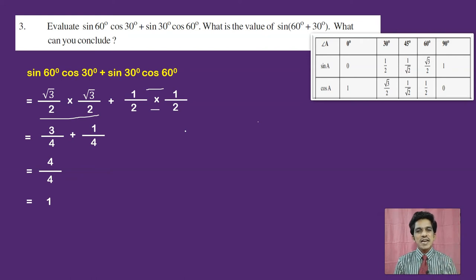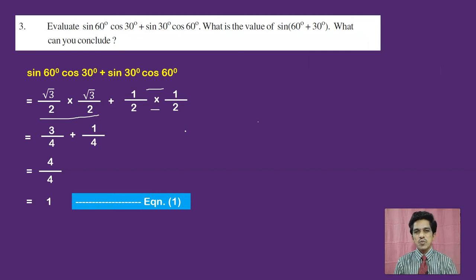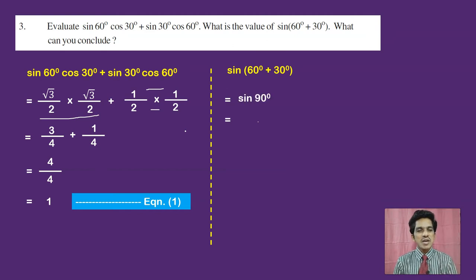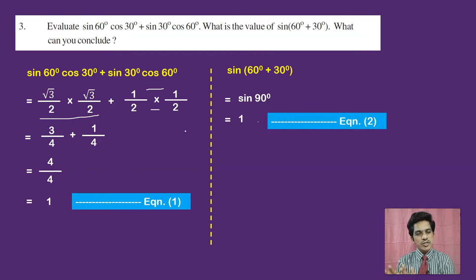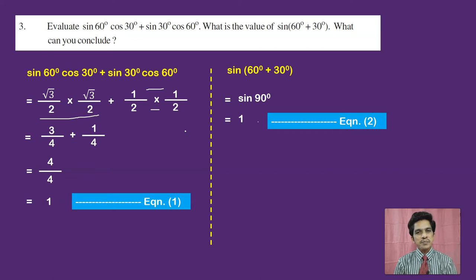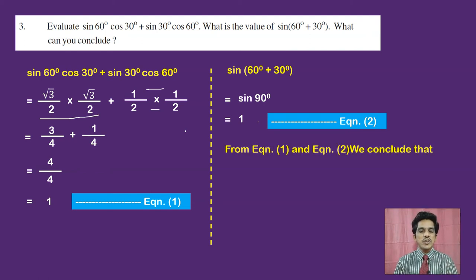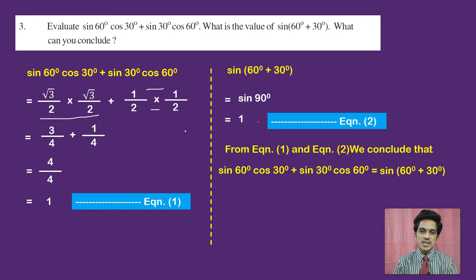Now for the second part: sine of (60 + 30) equals sine of 90 degrees, which equals 1 from the trigonometric table. Taking this as equation 2, we see that equation 1 and equation 2 are both equal to 1. The conclusion is that sine 60 cos 30 + sine 30 cos 60 equals sine(60 + 30). This is actually the generalised formula: sin A cos B + cos A sin B = sin(A + B), which you will learn in higher classes.